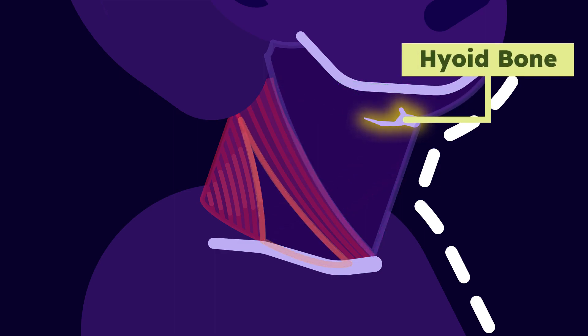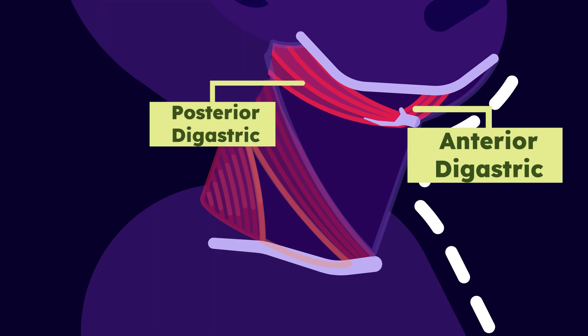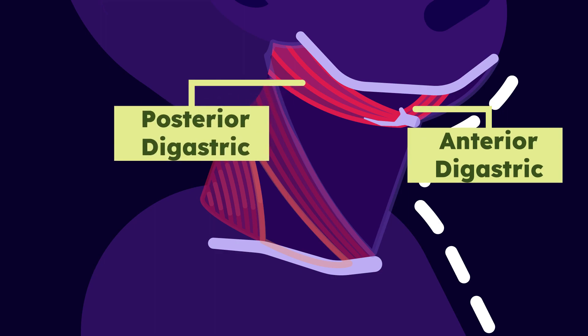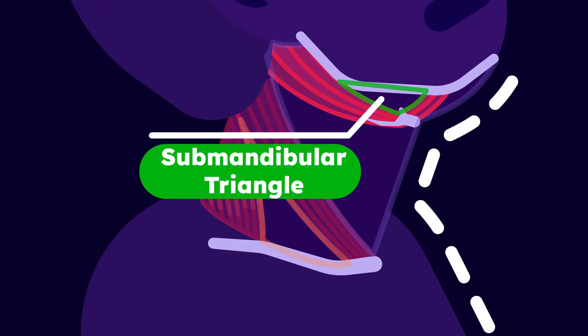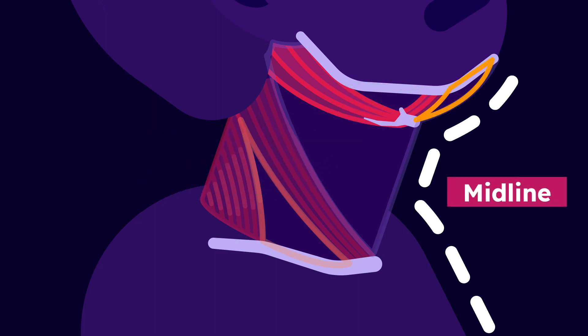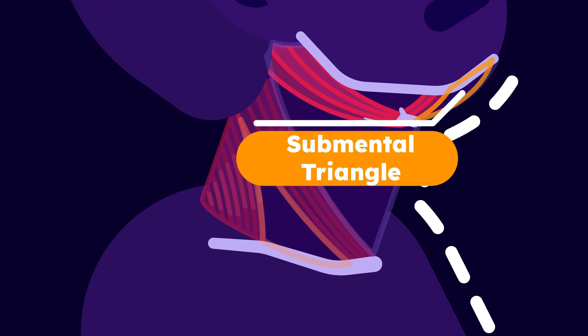For starters, locate the hyoid bone. The digastric muscle will attach to it, and it is divided into the anterior belly and the posterior belly. The triangle between both digastric muscles will be the submandibular triangle, and the triangle between the middle line of the neck and the anterior digastric will be the submental triangle.